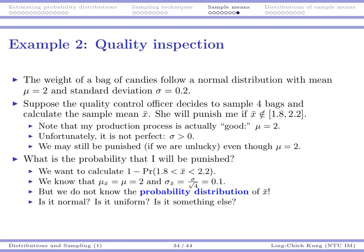If x-bar is within 1.8 and 2.2, I will not be punished. So I want to calculate 1 minus the probability that I am not punished. But if I do not know the distribution of x-bar, it would be hard for me to calculate that. Even though I know mu_x-bar is 2 and sigma_x-bar is 0.1, I still need the distribution of x-bar — I need to know whether it is normal, uniform, or anything else. So that's the topic in the next video.